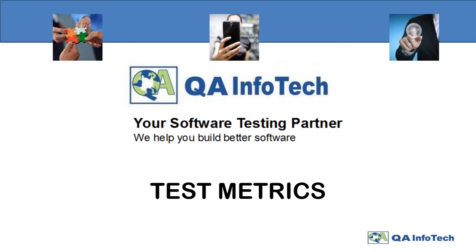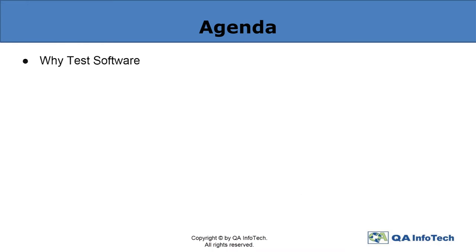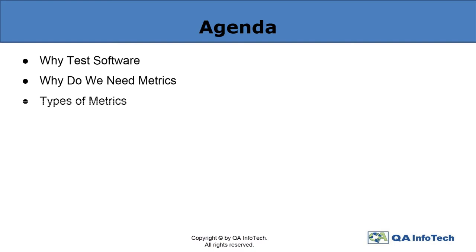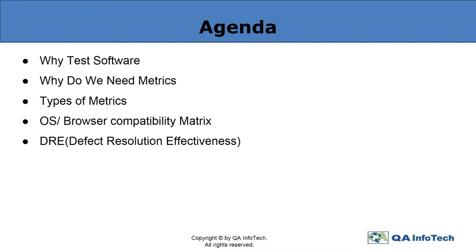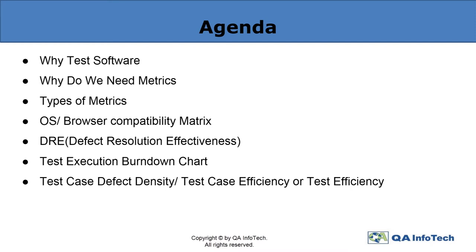This video will shed some light on the nuances of test metrics. It will cover the need of software testing as well as creating test metrics, its types, the OS browser compatibility metrics, DRE and its formula, the test execution burndown chart, and understanding test case defect density and test effectiveness along with the contents of creating a test execution report.